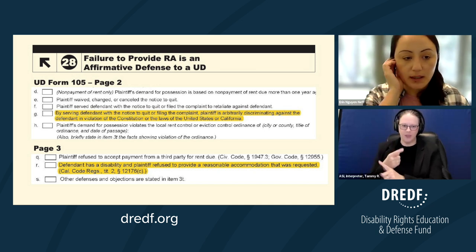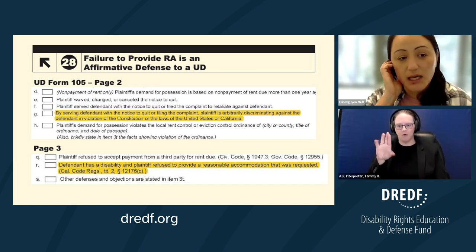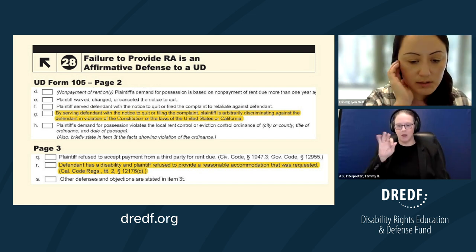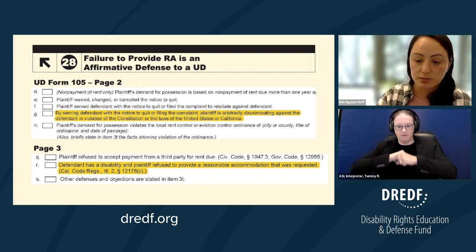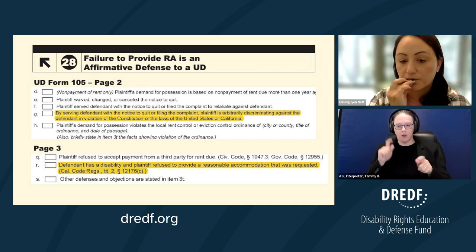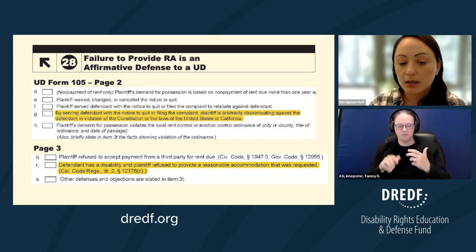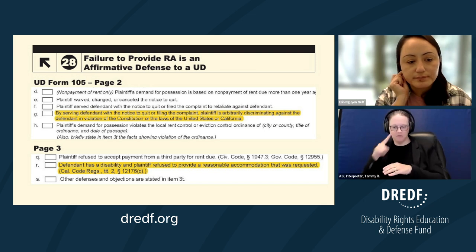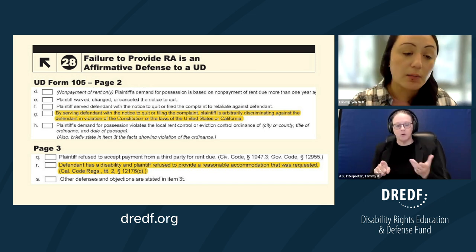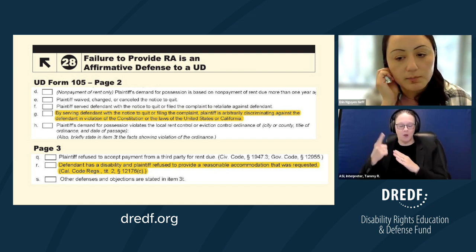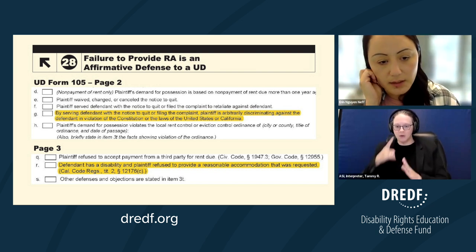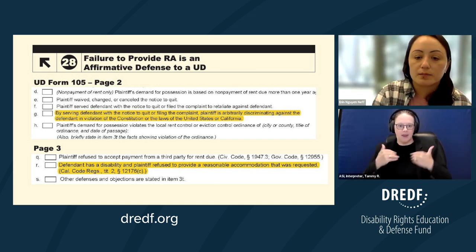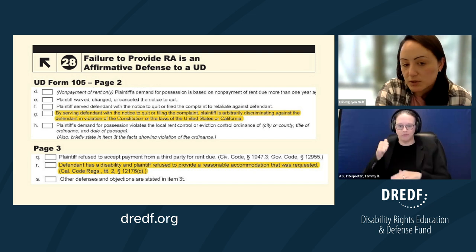On the UD form, the affirmative defenses you'll want to check off: on page three, the second one is the most obvious — refusal to provide a reasonable accommodation — and it should be connected to the basis for the unlawful detainer. You might also have a claim under the first option: serving the defendant with a notice to quit by arbitrarily discriminating against them in violation of the Constitution or the laws of the United States. That might be an opportunity to bring in other laws like the ADA.